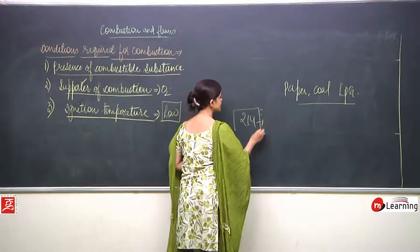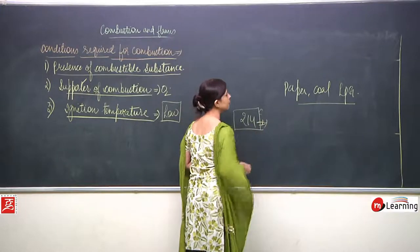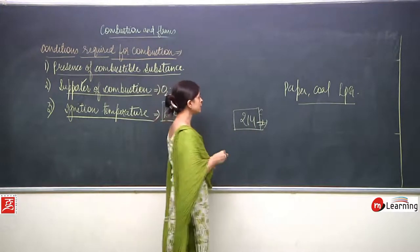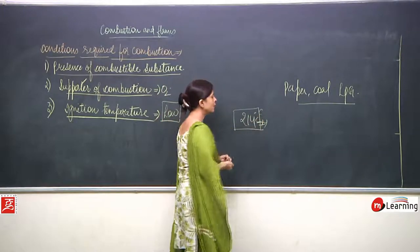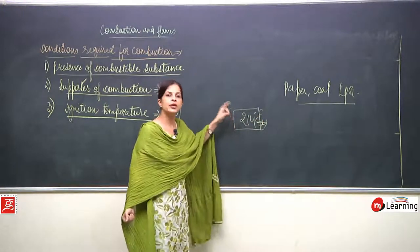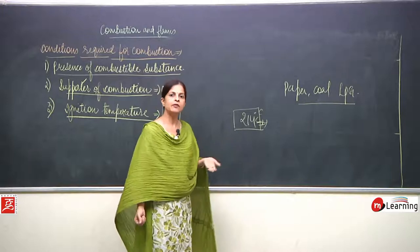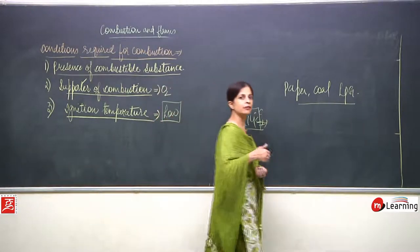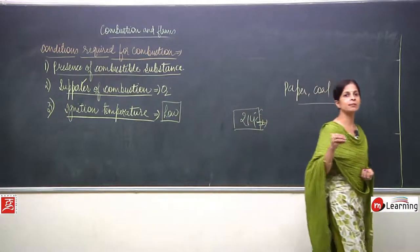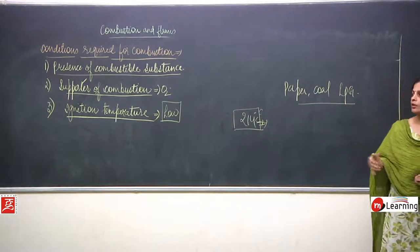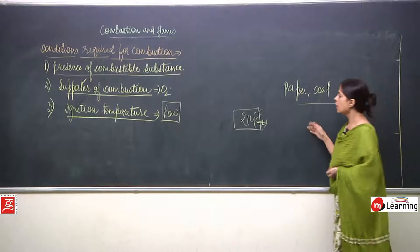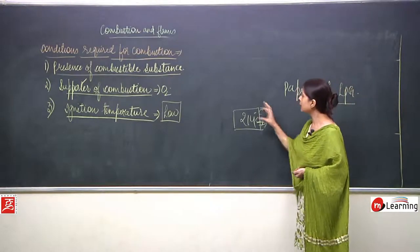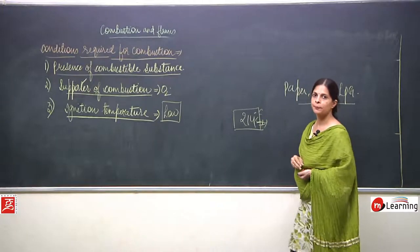If the ignition temperature is given to a substance and it reaches that temperature, it will start burning. After that, there is no need to keep supplying that temperature again, because when the substance burns, a lot of heat is automatically produced which maintains the ignition temperature.